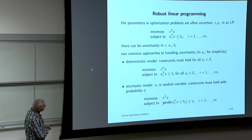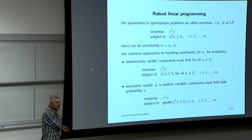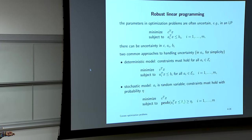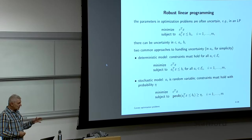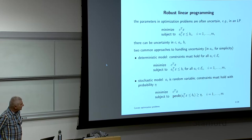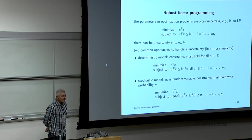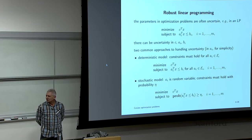You can also use a stochastic model: a_i is Gaussian with mean a_i̅ and covariance Σ, so a_i^T x is Gaussian with mean a_i̅^T x and variance x^T Σ x. You'd require the probability that the constraint holds to exceed some level η, like 0.9, 0.95, or 0.99.